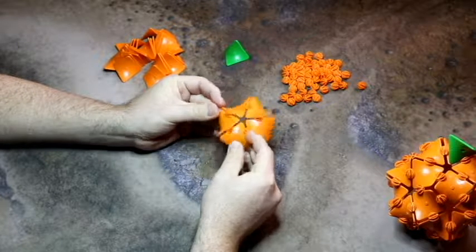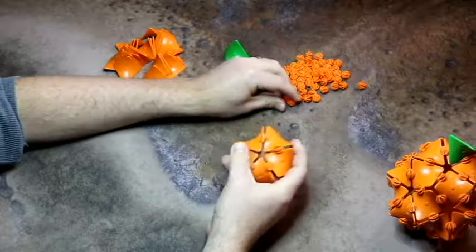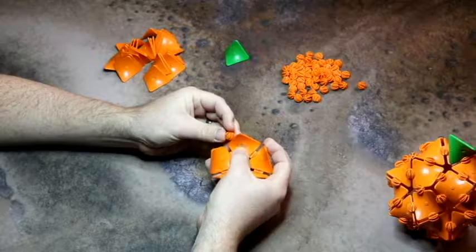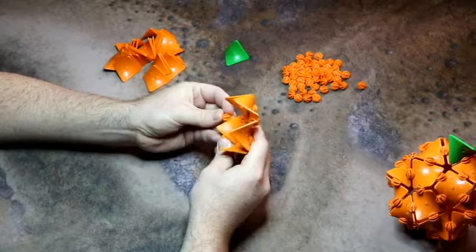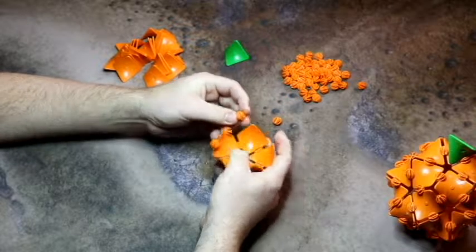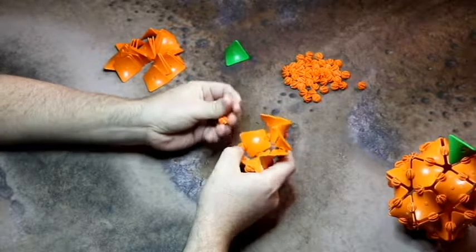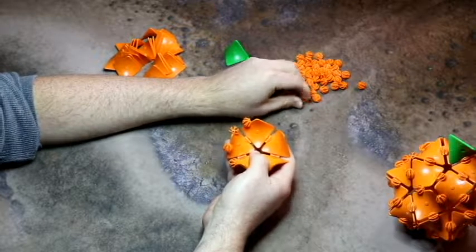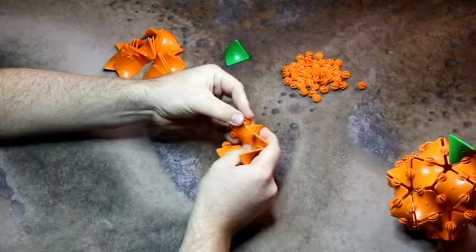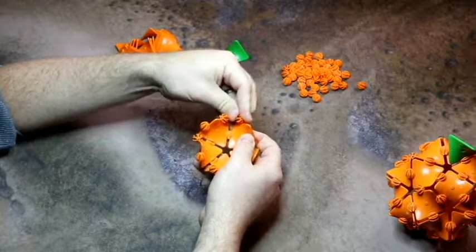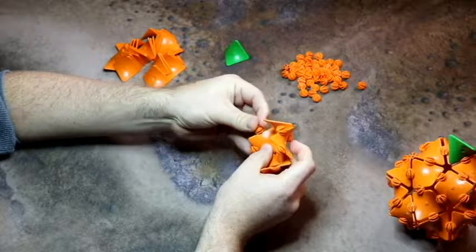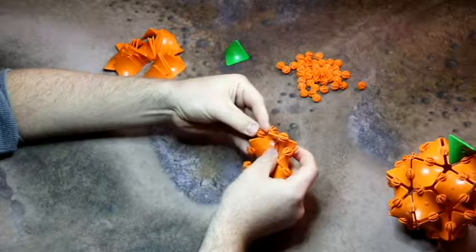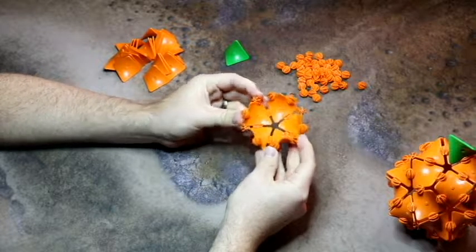Once you have your five high-pars together, we're going to take connectors. If you flip it over so the points are all pointing up, we need a connector on each of the sides of the high-pars. So just go around the circle.